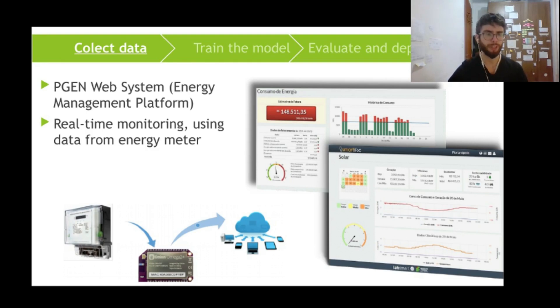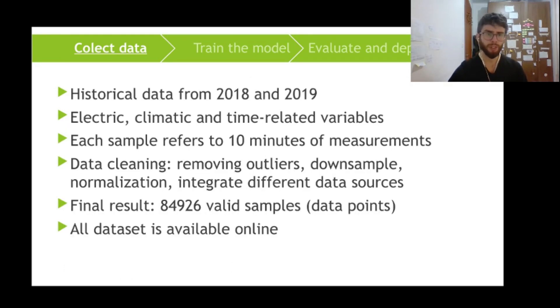Using this infrastructure of Pejain project, we collected two years of data, including electrical variables like voltage, climatic variables like temperature, and time-related variables like the hour of the day.